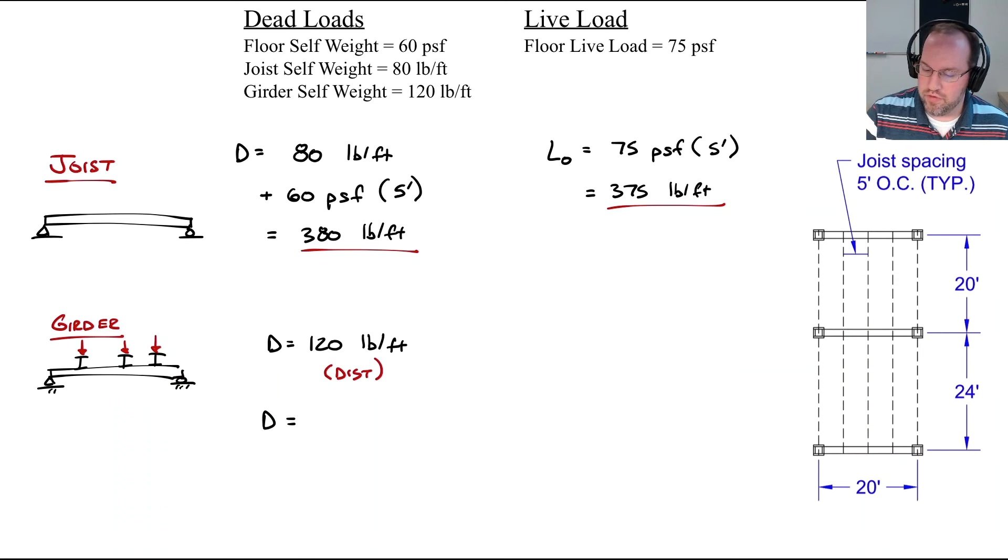First considering my distributed load, it carries itself at 120 pounds per foot. For our point loads, each point load encompasses an area defined by one half of the span of the joists both to the north and to the south. That area is 22 feet by five feet. Each point load is our floor weight of 60 pounds per square foot multiplied by the area of 22 by five feet, plus 22 feet of joist self-weight at 80 pounds per foot. Adding all that together we get 8,360 pounds per point load.